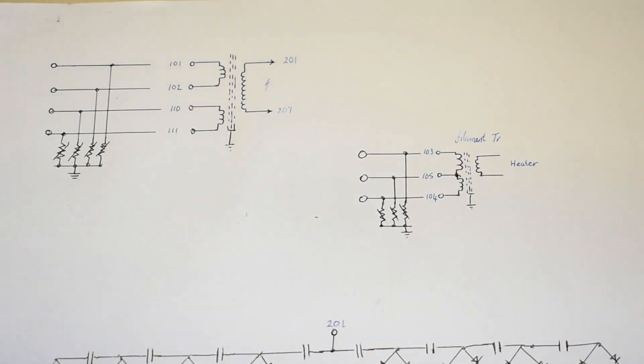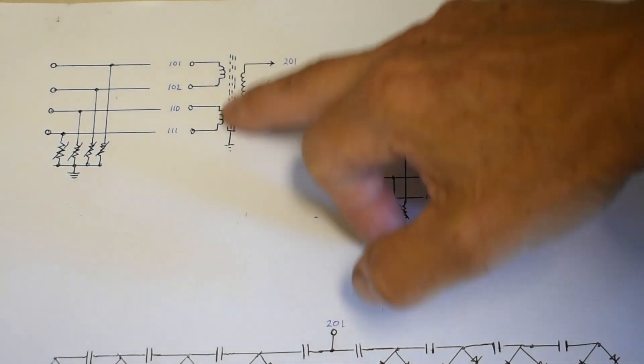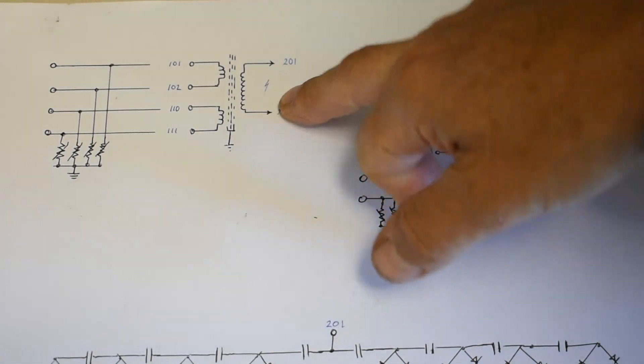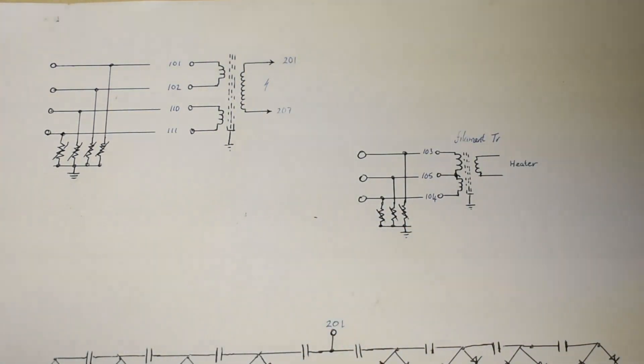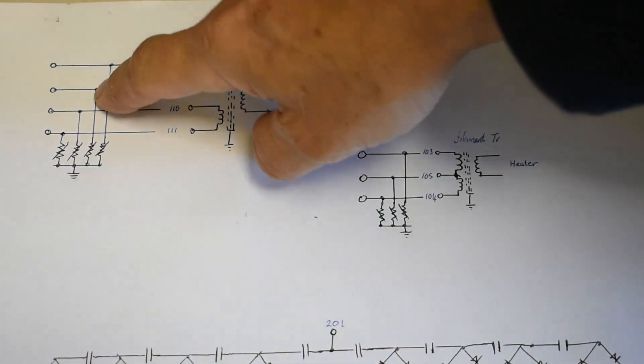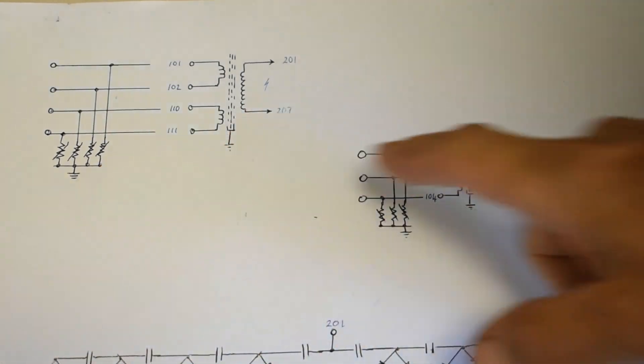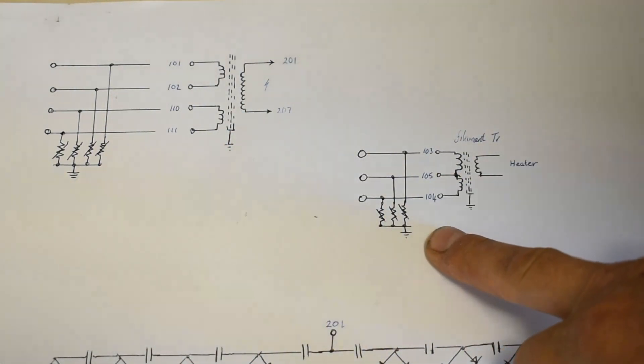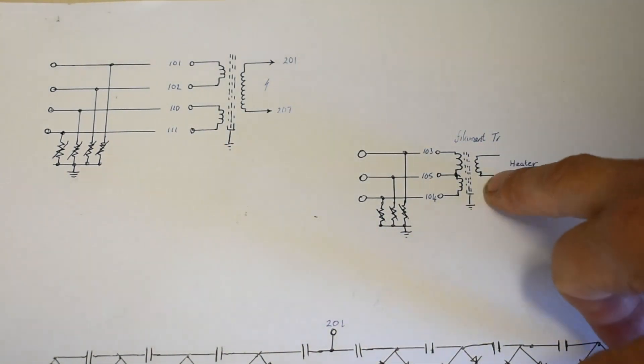Here we can just quickly go through the diagram for the X-ray head. I've got the transformer here, this is the high voltage transformer. There's two primary windings in there and the inputs are on the board and they're all protected by varistors and likewise in the primary transformer for the filament.